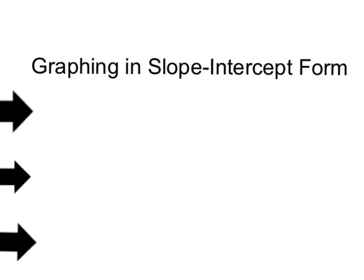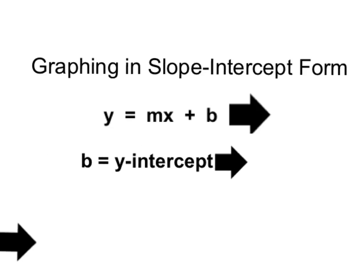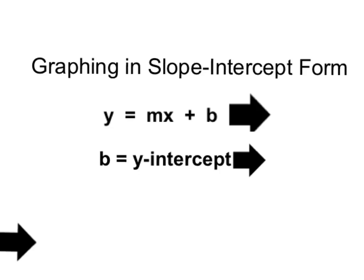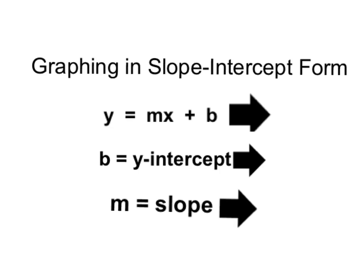The first thing we want to remember about graphing in slope-intercept form is the formula for slope-intercept form, which is y equals mx plus b. In that formula, b is our y-intercept point — that's the point where the line crosses the y-axis. We also need to know about m, which is our slope. Our slope stands for rise over run.